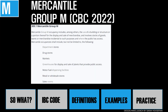Moving on to mercantile group M occupancy, which includes the use of a building or structure or a portion thereof for the display and sale of merchandise, involving stocks of goods, wares, or merchandise where the public has access. These occupancies include department stores, drug stores, markets, and more. Incidental storage areas that are 10% or less are considered an accessory area per IBC section 508.3.1. Larger storage areas are classified as group S, but most retail facilities will fall into the M category.